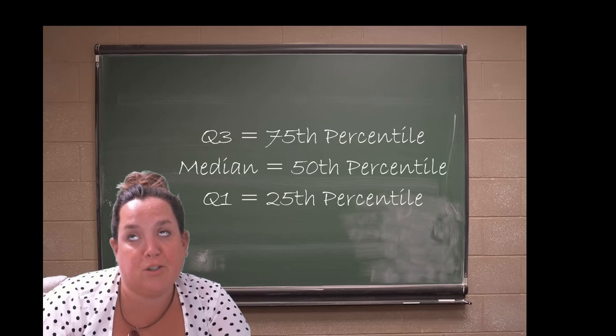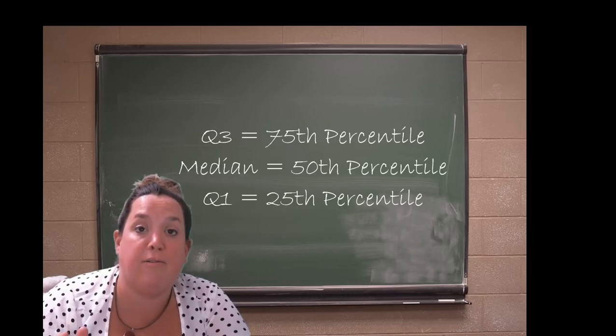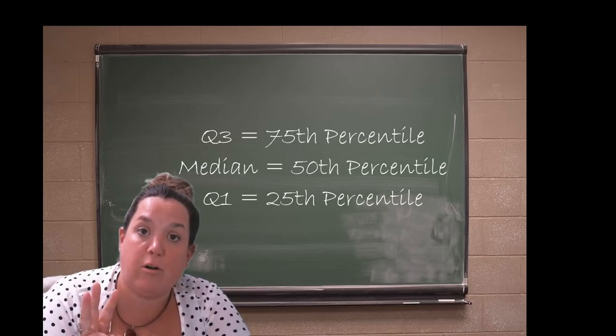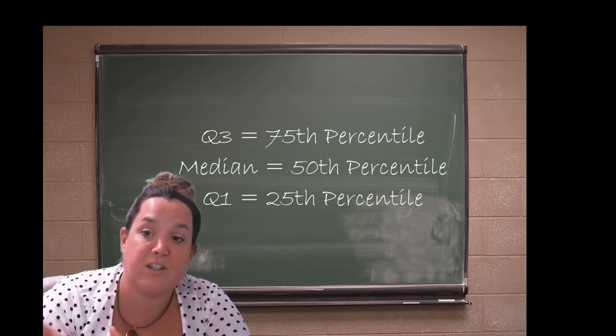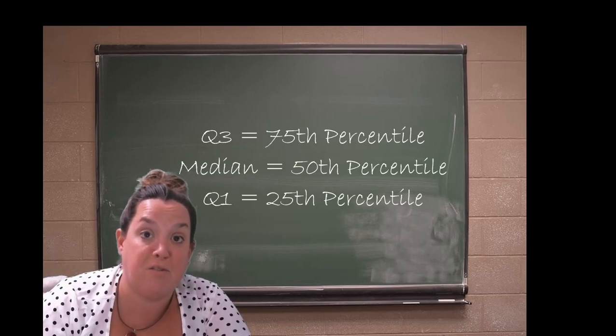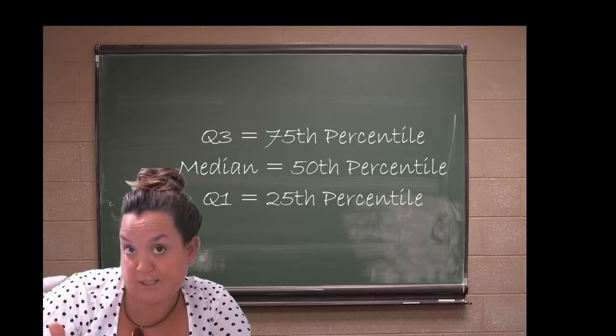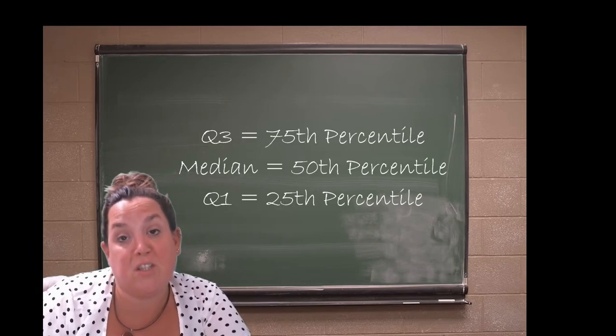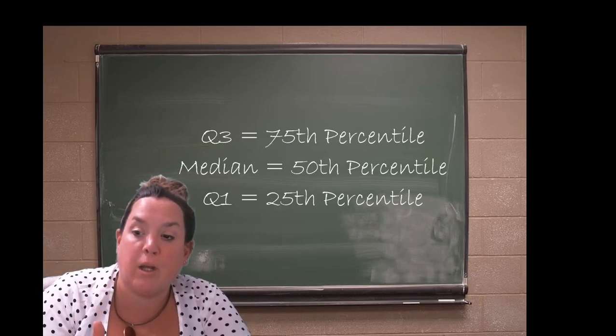They're called that because of the percentage. Q3 has three quarters or 75% below it, so Q3 is actually the 75th percentile. The median is the middle, so it would be the 50th percentile because 50% is below it. And then Q1 has one quarter below it or 25%, so it's actually the 25th percentile.